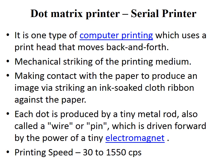The medium is the paper. The contact between the paper to produce an image or a letter or a character is via the striking of an ink-soaked ribbon cloth against the paper. The dots produced in the printing medium are created by tiny metallic rods, also called wires or pins, which are driven by the power of tiny electromagnets or solenoid coils. The printing speed of dot matrix printers comes around 32 to 550 characters per second.